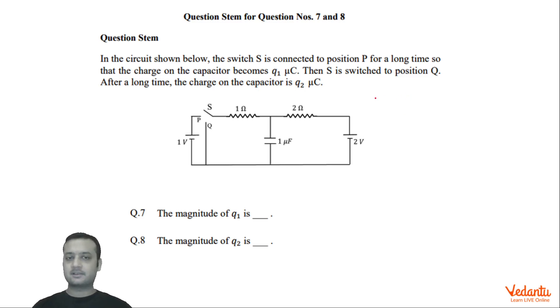So very easy question. Let's draw the circuit when the switch is in position P. In that case this wire is useless. So we can say that this is how the circuit is going to look like. This is 2 volts, this is 1 volt, this is 1 ohm, this is 2 ohm, this is 1 microfarad.